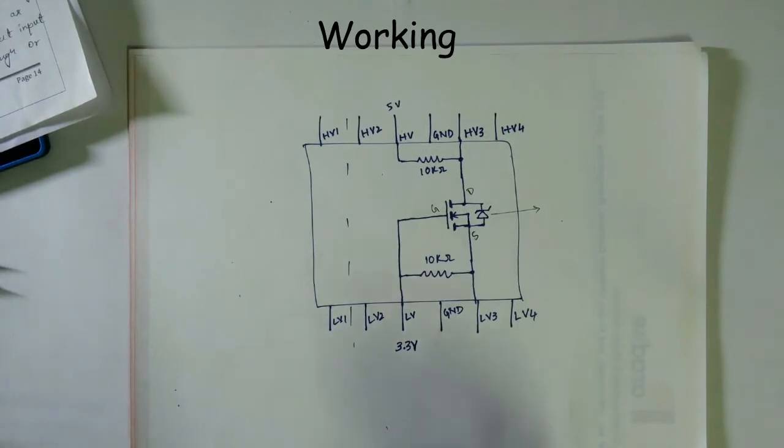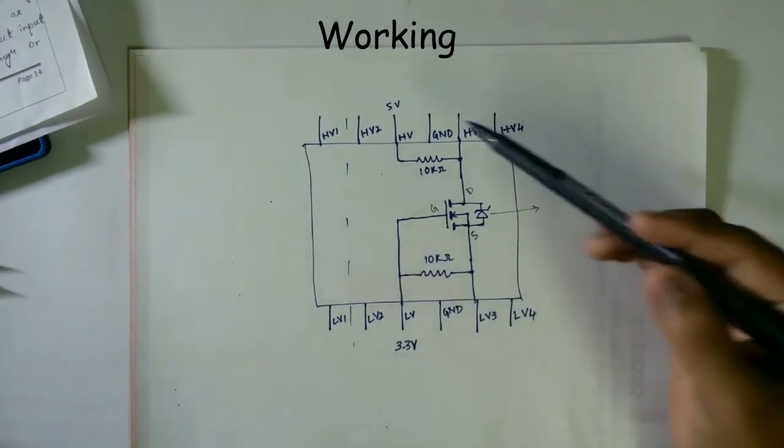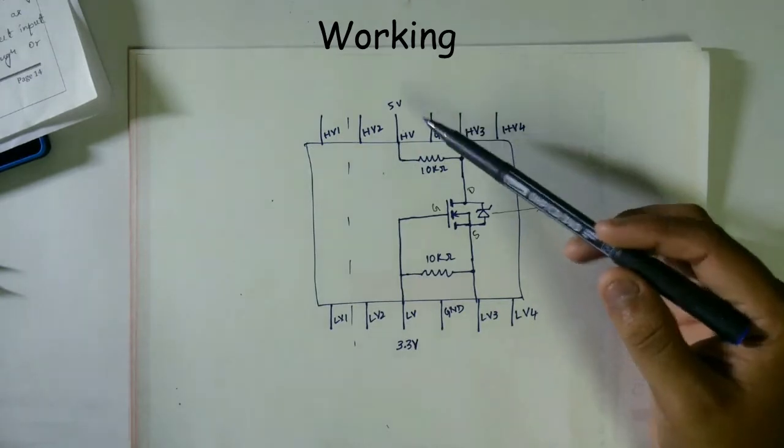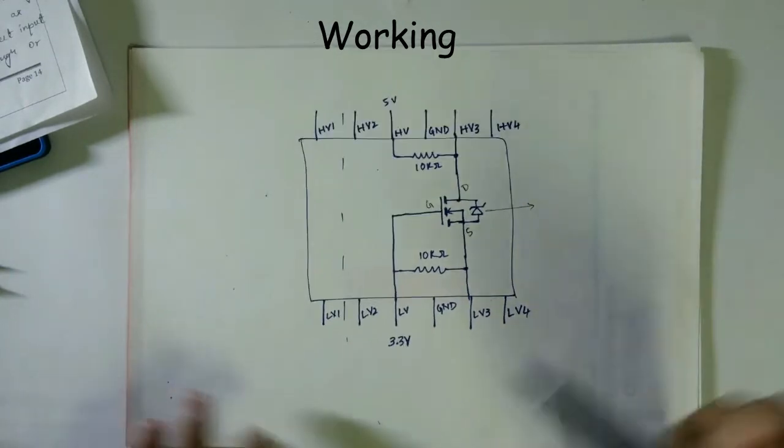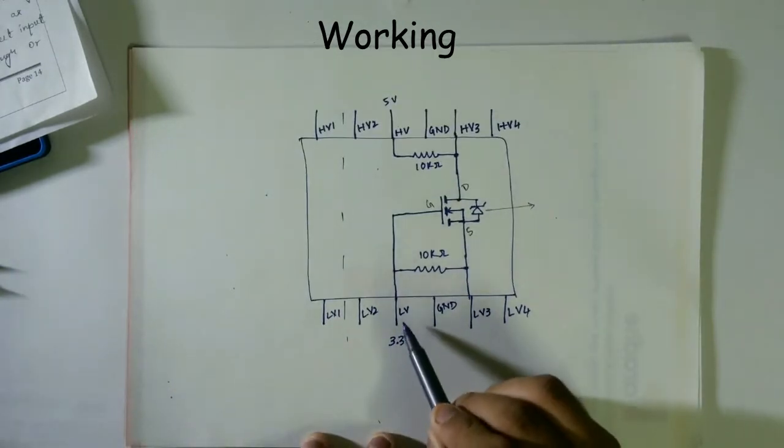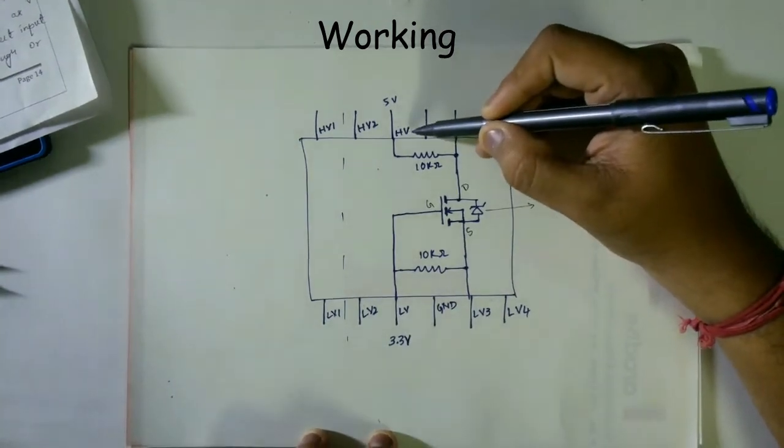If you want to convert a low voltage like 3.3 volts to high voltage, for example 5 volts, then you have to give 3.3 to low voltage this pin and 5 volts to this pin, HV2.